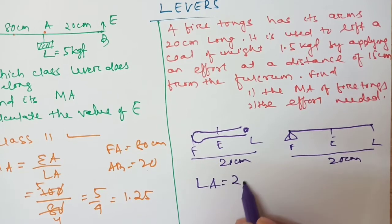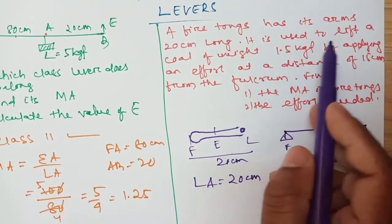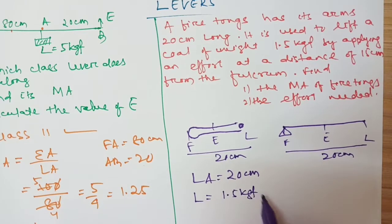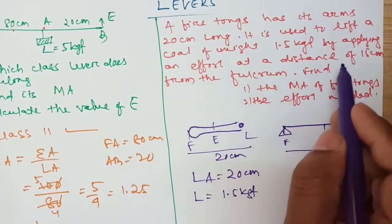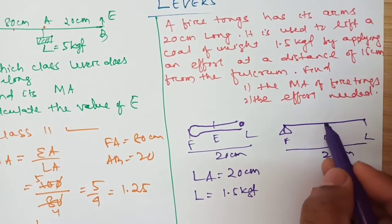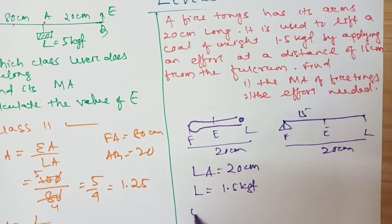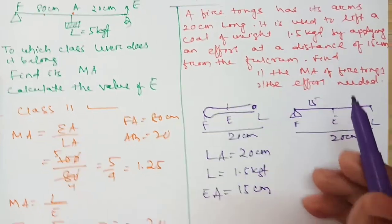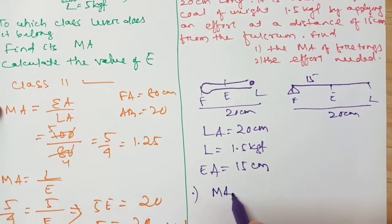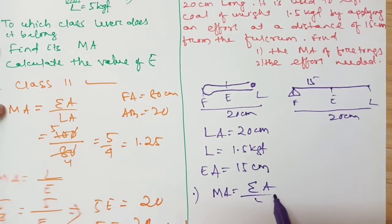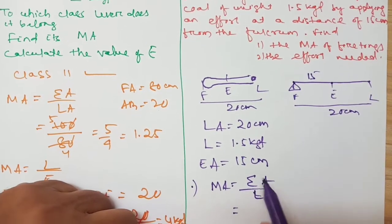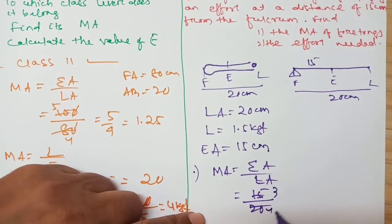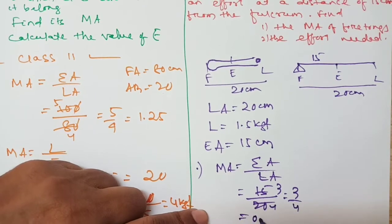Load arm is 20 cm. Load (L) is 1.5 kgf. Effort is applied at 15 cm from fulcrum, so effort arm = 15 cm. MA = effort arm by load arm = 15 by 20. This simplifies to 3 by 4, which equals 0.75. So mechanical advantage is 0.75.